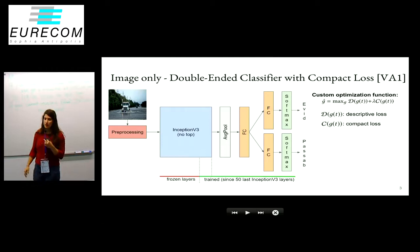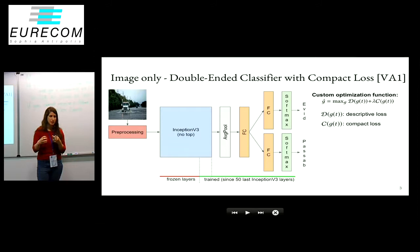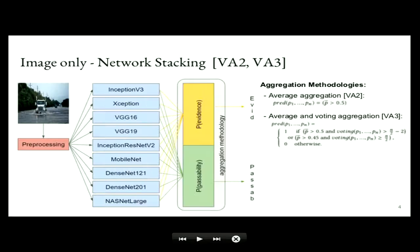So we saw a paper proposing a compactness loss, which is basically for the class that you have defined, you try to make the visual features as close as possible so that it's easier to cluster. So we implemented that compactness loss to try to also improve the results.